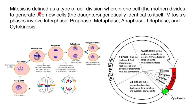Mitosis is defined as a type of cell division wherein one cell, which is the mother, divides to generate two new cells, the daughters, which are genetically identical to itself.